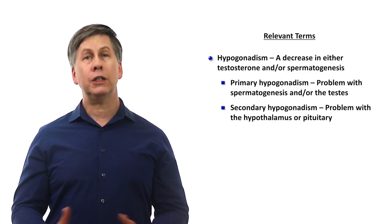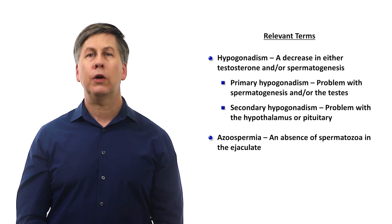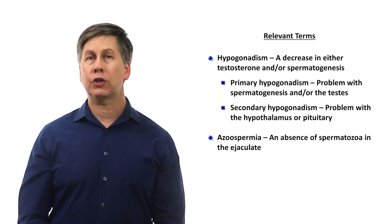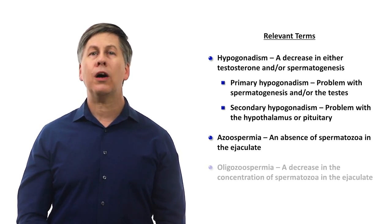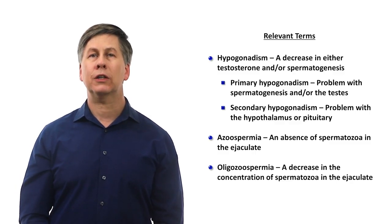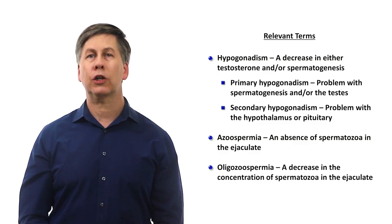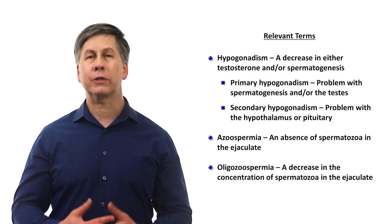Regarding spermatogenesis, azoospermia refers to an absence of spermatozoa in the ejaculate. And oligozoospermia refers to a decrease in the concentration of spermatozoa in the ejaculate, but not total absence. So now the etiologies. In my opinion, the most logical of diagnostic frameworks places the etiologies into four general categories.